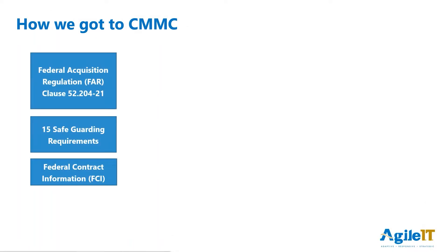So let's look at how we got to CMMC. First, we have the Federal Acquisition Regulations. FAR came about in 1979 as an attempt to streamline government acquisitions. Part of FAR is a set of mandatory clauses that must exist in every federal contract. The FAR includes 15 safeguarding requirements for federal contract information.